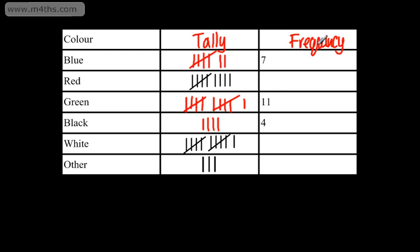We can now fill out the frequency column. We can see that we've got five and four, which is nine. Here we've got five, five, and one, which is eleven — the same as this one just here. And finally we've got three. So I've filled this out, and again, sometimes you might have a total at the bottom, which would be the total frequency — simply completing a tally chart given some of the information.